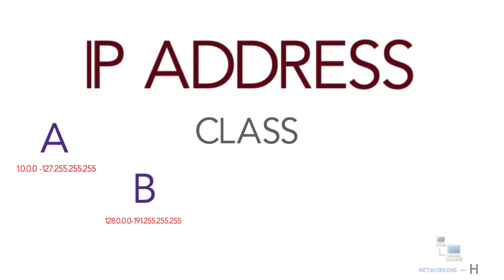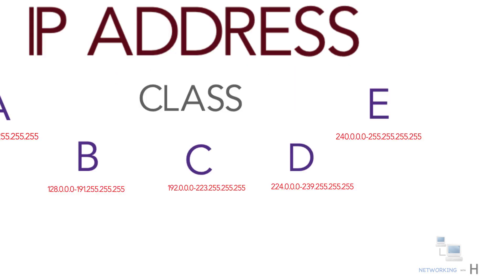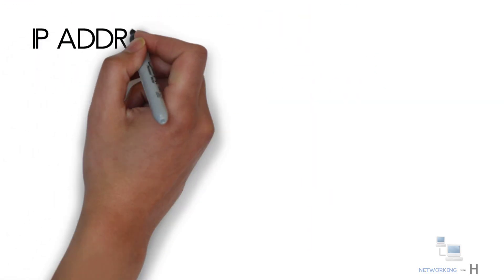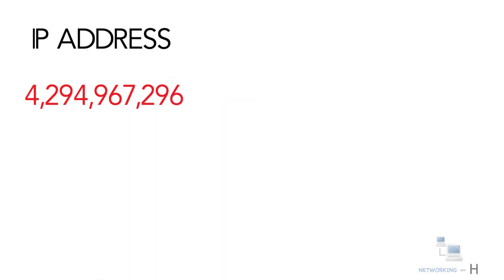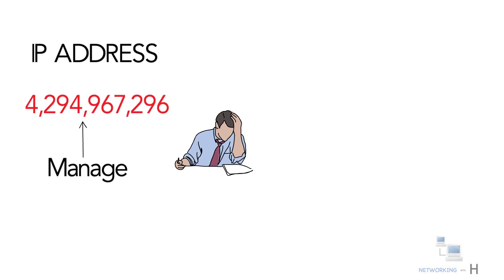Hello everyone. In this session of the CCNA series, I'll discuss IP address classes. There are around 4.3 billion IPv4 addresses. Managing all those addresses without any scheme is nearly impossible. Let's understand it with a simple example.